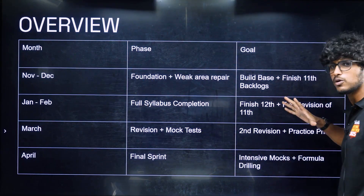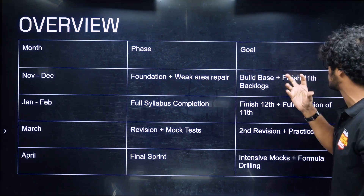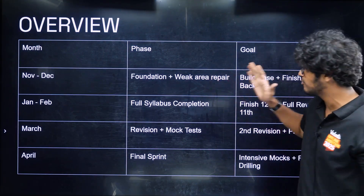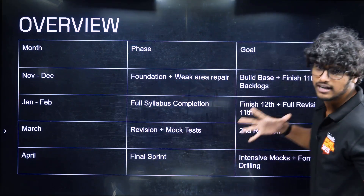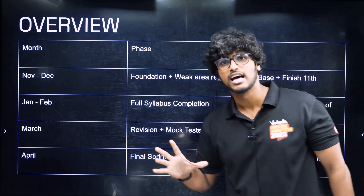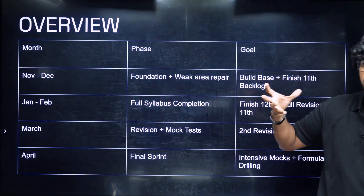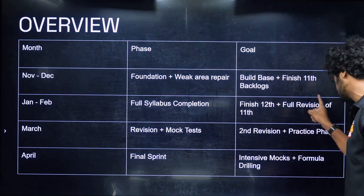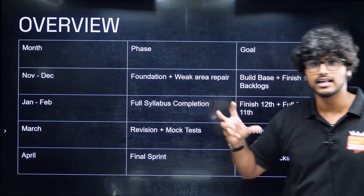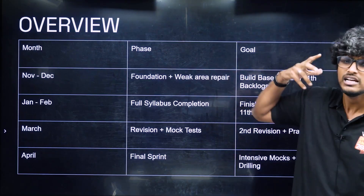We will develop the foundation in February. Sometimes June, January, and April — you will start to complete the full revision of the month. March is going to complete the revision, and you are going to start the second phase of revision. Already 11th revision is done; in the second phase, you are going to get a full 12th revision. This is going to be a practice phase, and in April there is a final sprint.